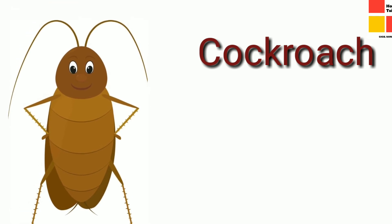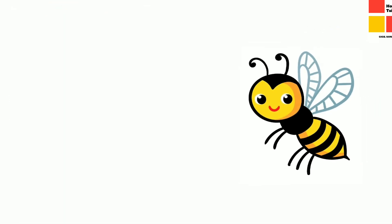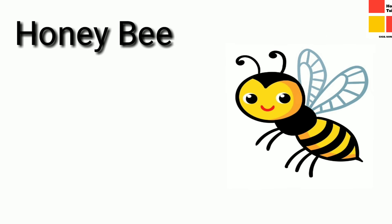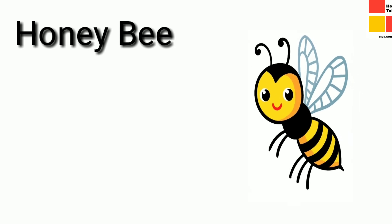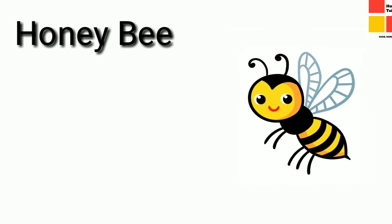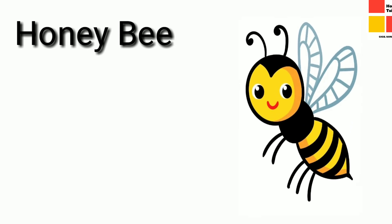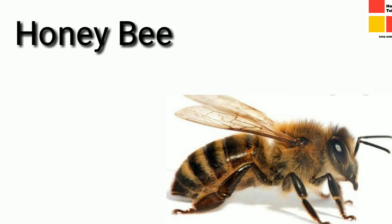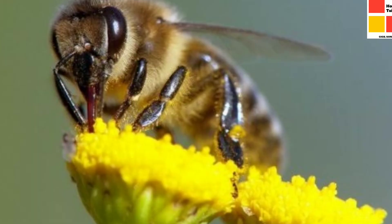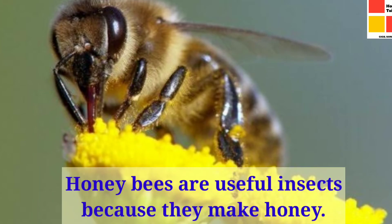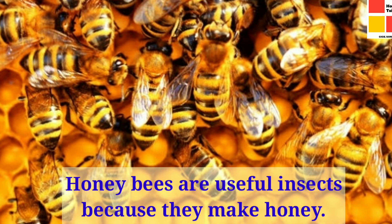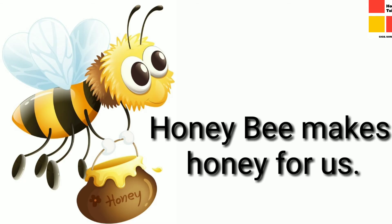Children, tell me the name of this insect. Yes, honeybee. Honeybees are insects that can fly. And what's their color? Yes, black and yellow. Honeybees are very useful insects, isn't it? Do you know why? Because it is the honeybee that makes honey for us.